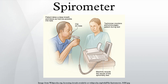A spirometer is an apparatus for measuring the volume of air inspired and expired by the lungs. A spirometer measures ventilation, the movement of air into and out of the lungs. The spirogram will identify two different types of abnormal ventilation patterns: obstructive and restrictive.